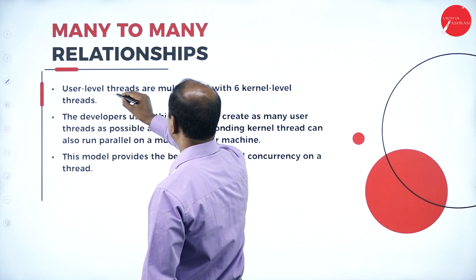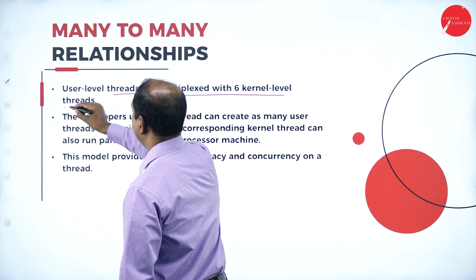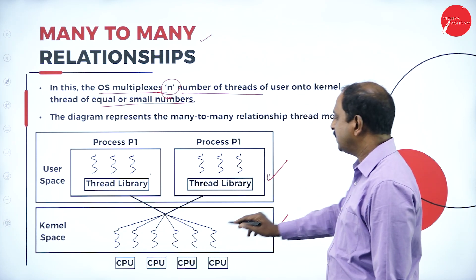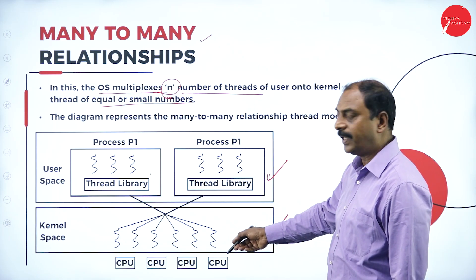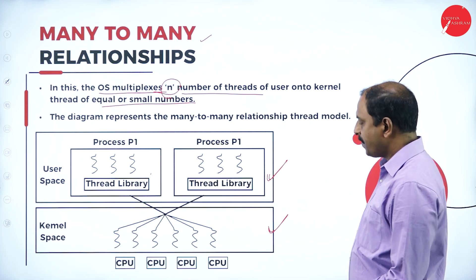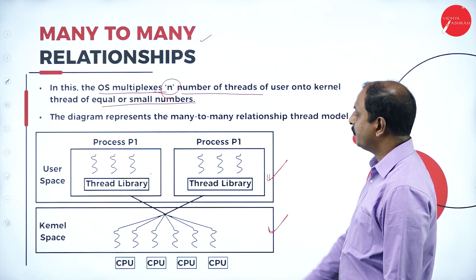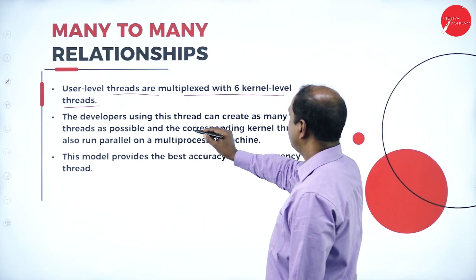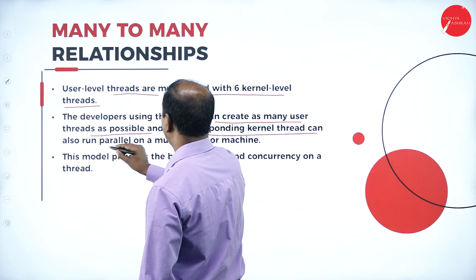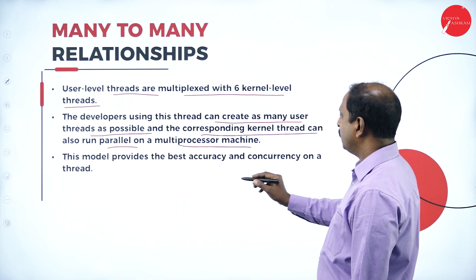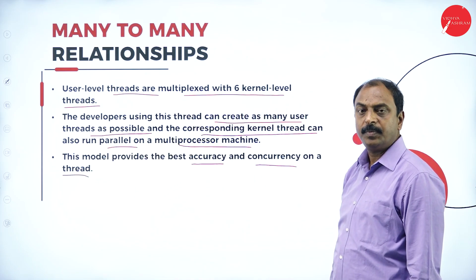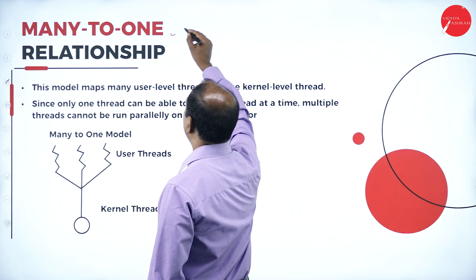In the example, user-level threads are multiplexed with six kernel-level threads. In process one there are three threads and in another process there are three threads — mapped to an equal number of kernel-space threads. Developers can create as many user threads as needed, and corresponding kernel threads can run in parallel on a multiprocessor machine. This model provides the best accuracy and concurrency.